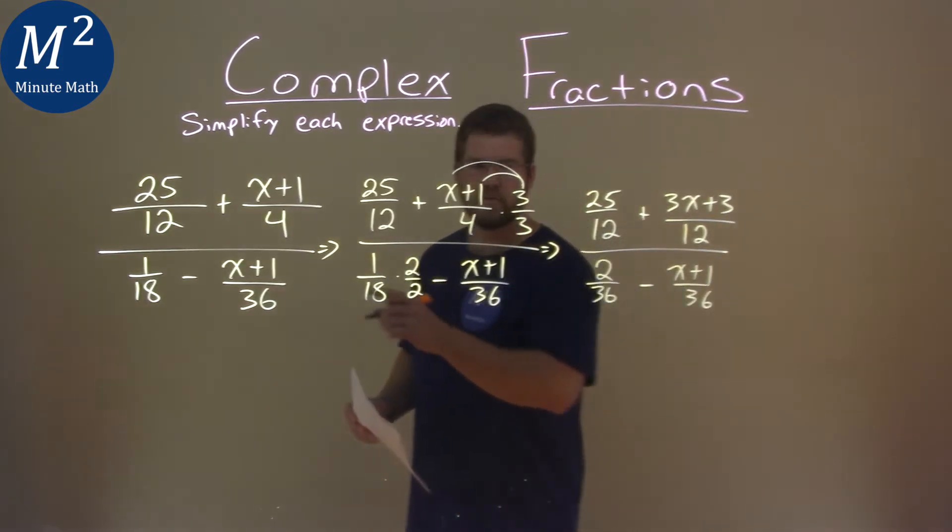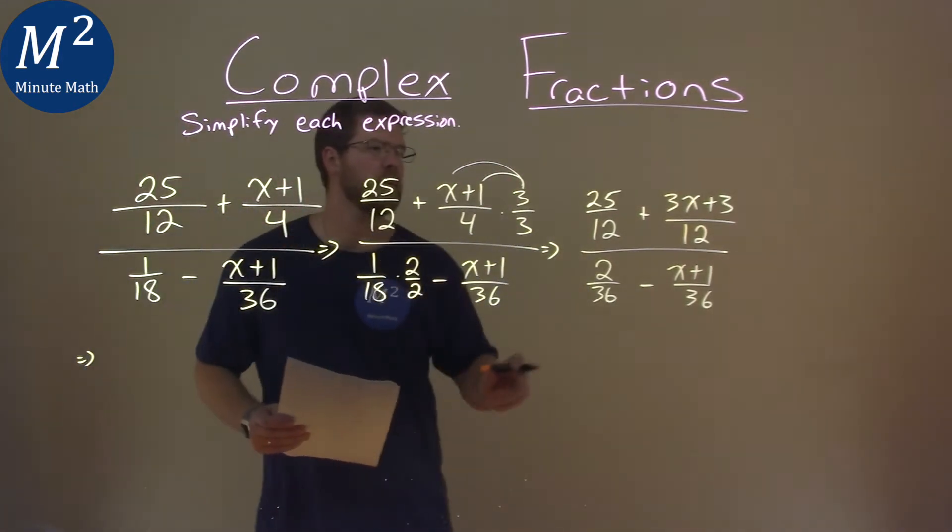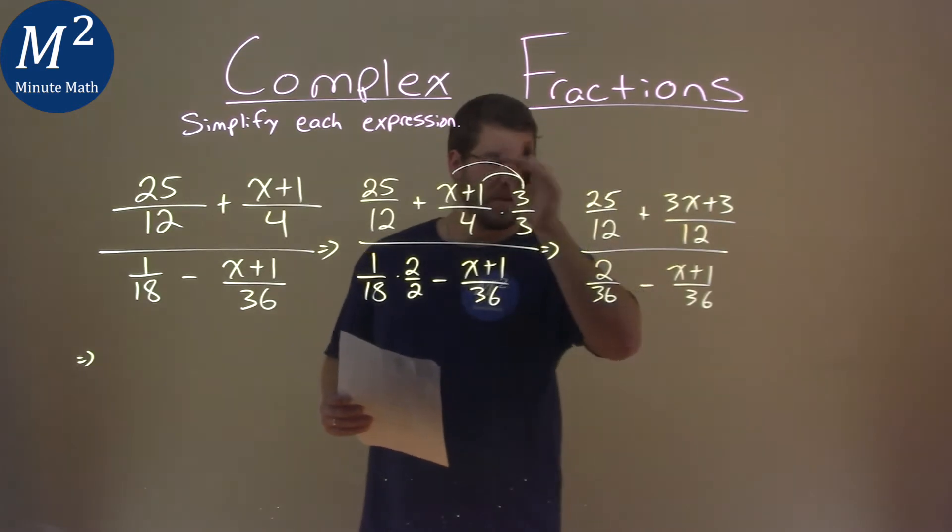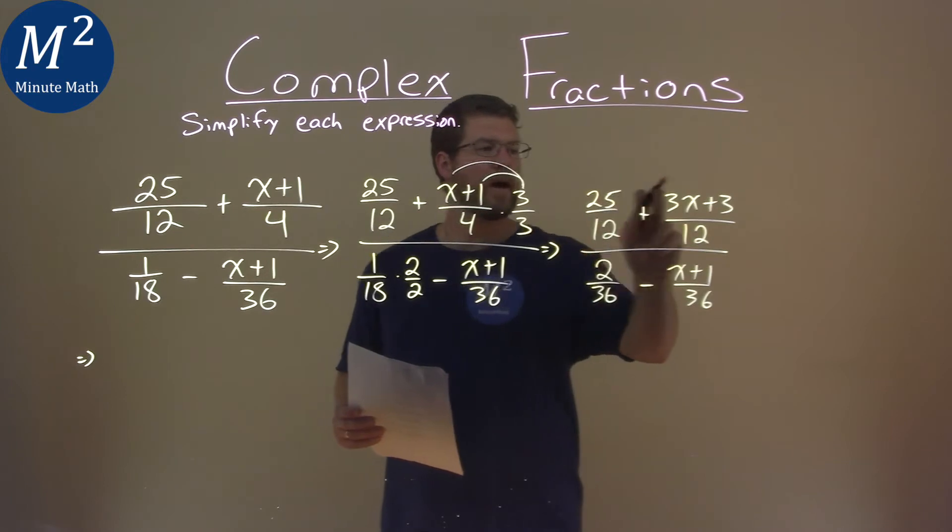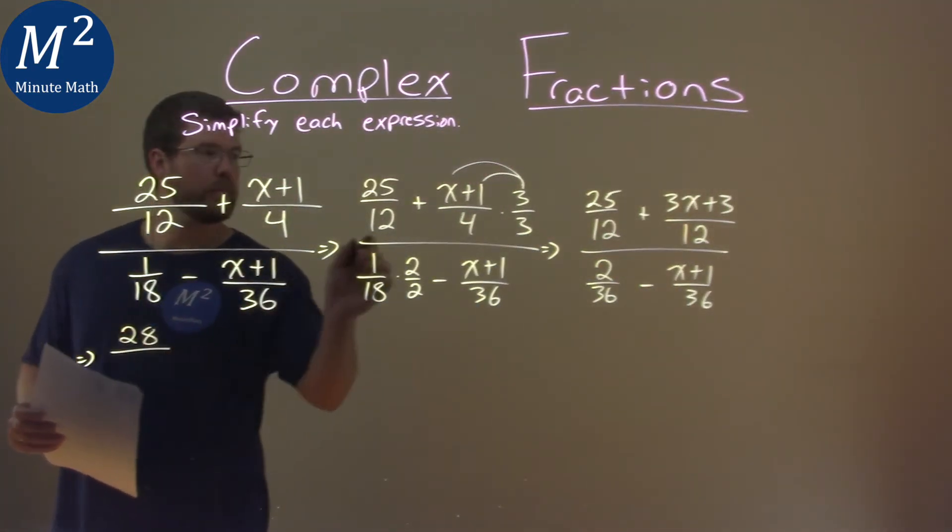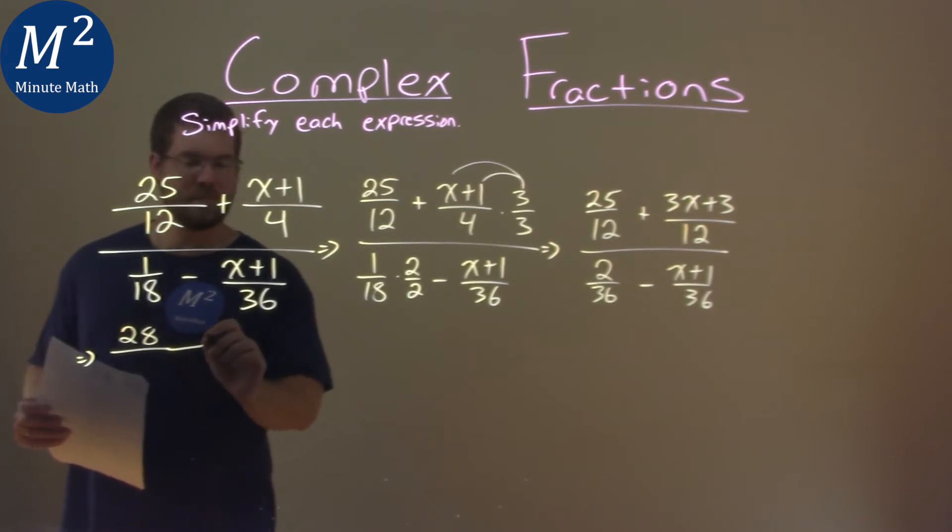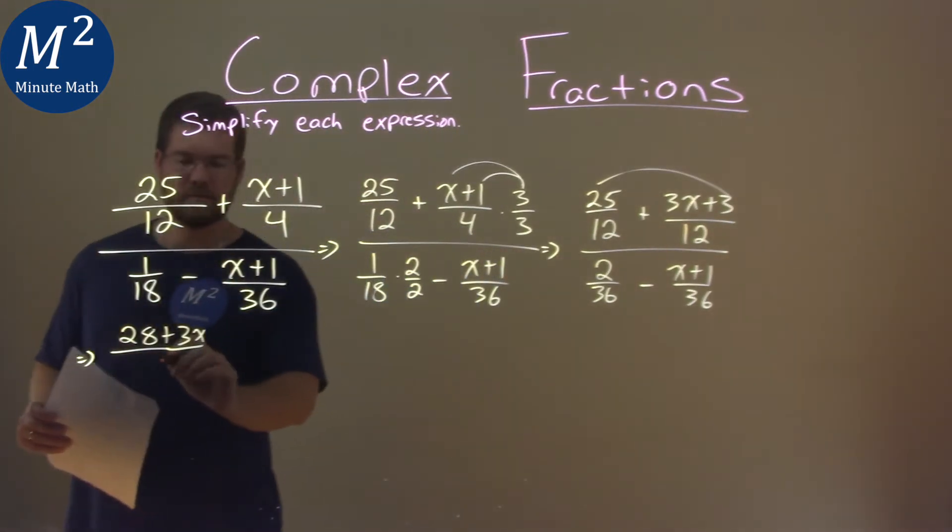So this next part is a little tricky. I'll do it over here. I'm going to combine our like terms in the big numerator and big denominator with the same denominator of 12. So 25 plus 3 is 28, plus the 3x. Don't forget the 3x there. So 25 and 3 is 28 plus 3x over 12.